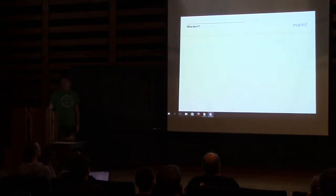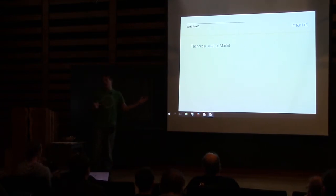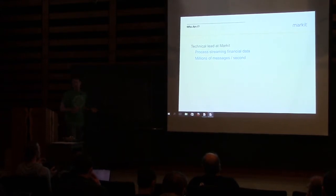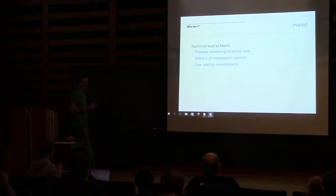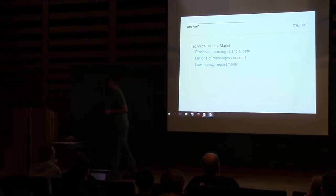My name is David Stone, I'm a technical lead at Marketo, a financial company. We process streaming financial data — there are millions of messages per second — and we care about throughput and latency. The majority of my time is spent worrying about performance; when I sit down to write code, it's usually to work on a performance problem.